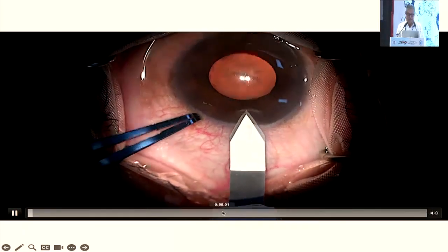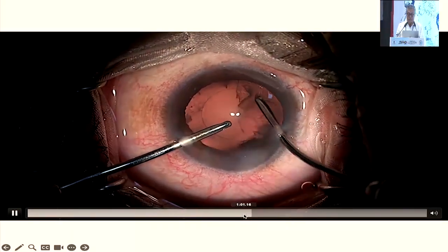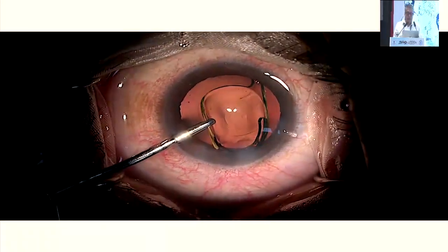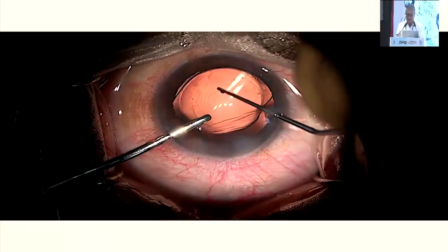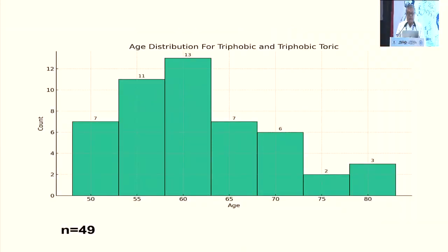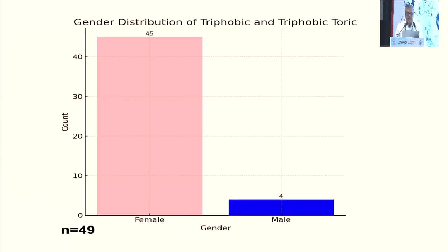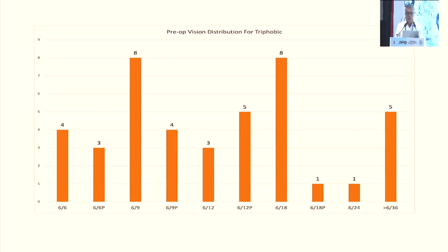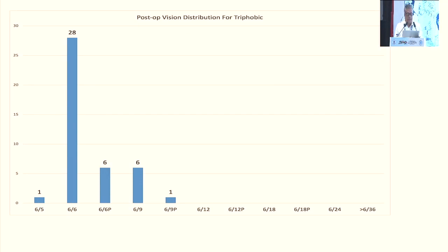Coming to my experience — this is a small video on the lens. It uses a disposable injector, and implantation is fairly easy. I did not have any problem with the injector system. This is my personal study — it's very small: 49 patients with age distribution of 50 to 80 years, with 45 female patients and 4 male patients. The lenses used were 42 toric and 7 non-toric. Most patients achieved very good 6/6 vision with N6.